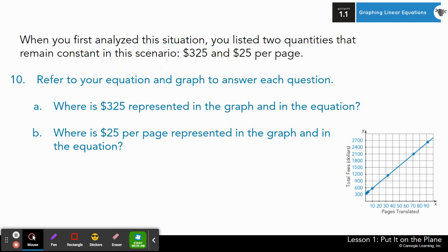And then we're moving on. Question 10. When you first analyze the situation, you listed two quantities that remain constant in the scenario, $325 and $25 per page. Refer to your equation and graph to answer each question. Where is 325 represented in the graph and in the equation? And where is $25 per page represented in the graph and in the equation? Set a timer for two minutes. Answer this on your own or with a partner. Actually, take only one minute. Pause here.